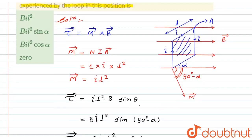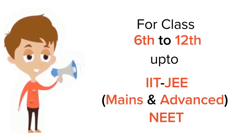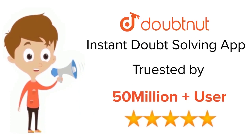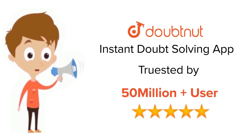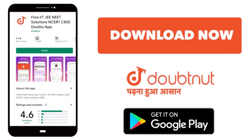Looking at the given options, option three is the correct answer for this question. This is the required solution — I hope you liked it. Thank you. For class 6–12, IIT JEE and NEET level, trusted by more than 5 crore students. Download the DoubtNet app today.